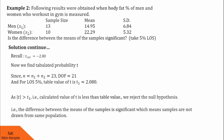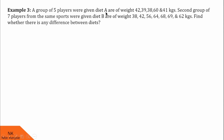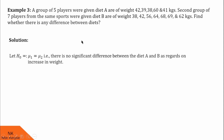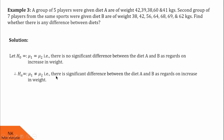Now let us proceed for the last example. A group of 5 players given diet A are of weight 42, 39, 38, 60, and 41 kgs. A second group of 7 players from the same sport given diet B are of weight 38, 42, 56, 64, 68, 69, and 62 kgs. We are asked to find whether there is a significant difference between the diets. We define H0 as: there is no significant difference between diet A and B, therefore mu1 equals mu2. HA will be: there is a significant difference between diet A and B, so mu1 is not equal to mu2. This is two-directional, therefore a two-tailed test.